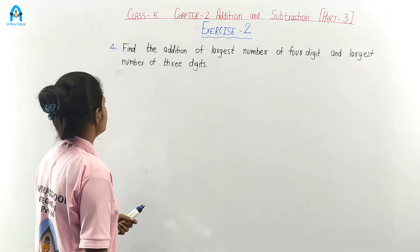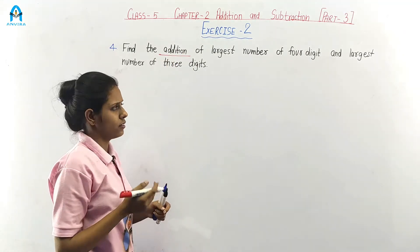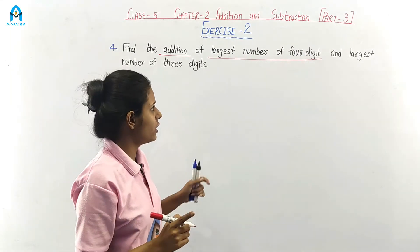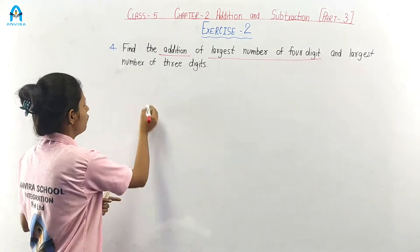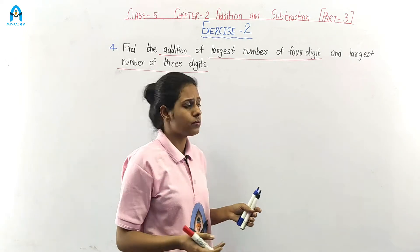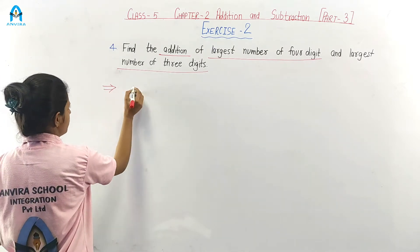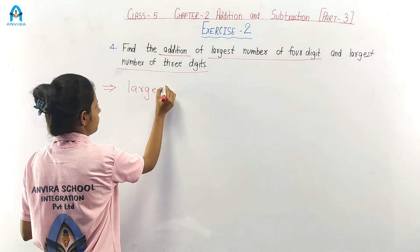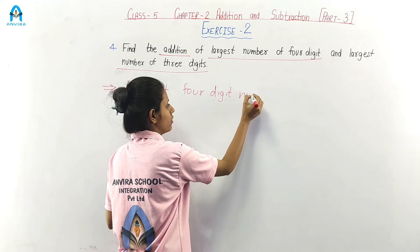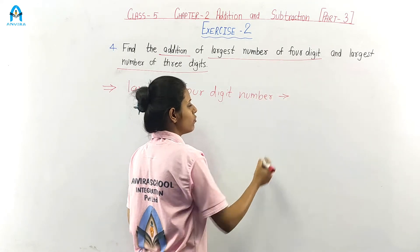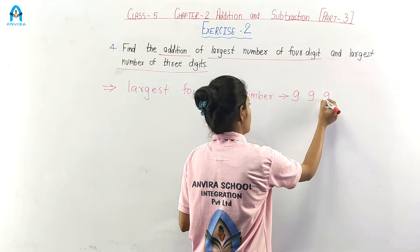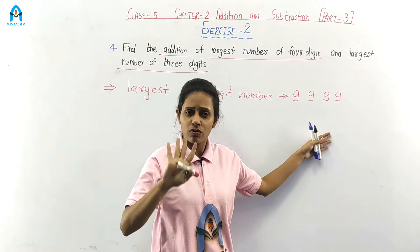First read the question: Find the addition. We have to add the largest 4-digit number and the largest 3-digit number. So first we have to find the largest 4-digit number. The largest 4-digit number is 9,999.